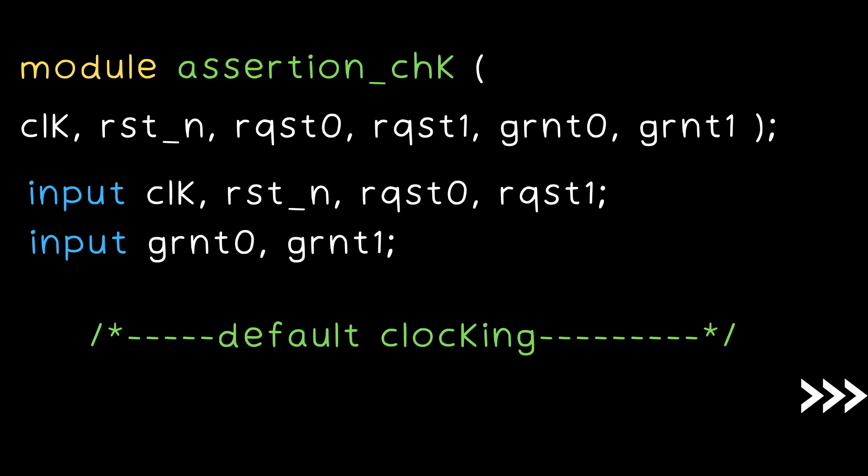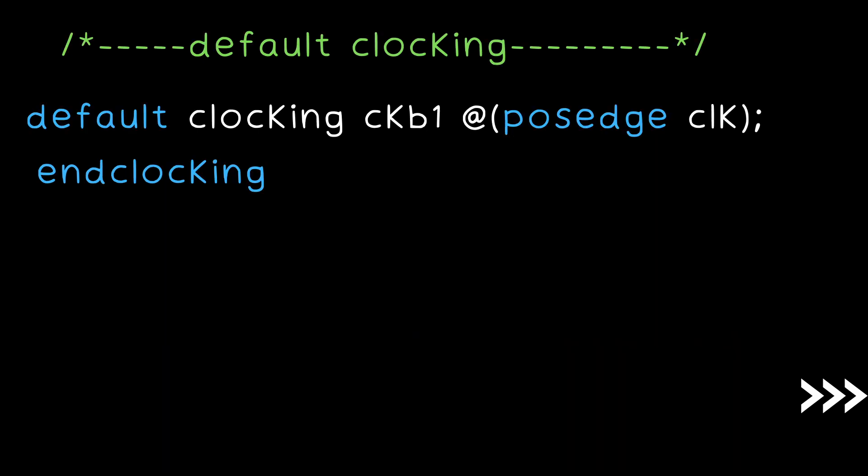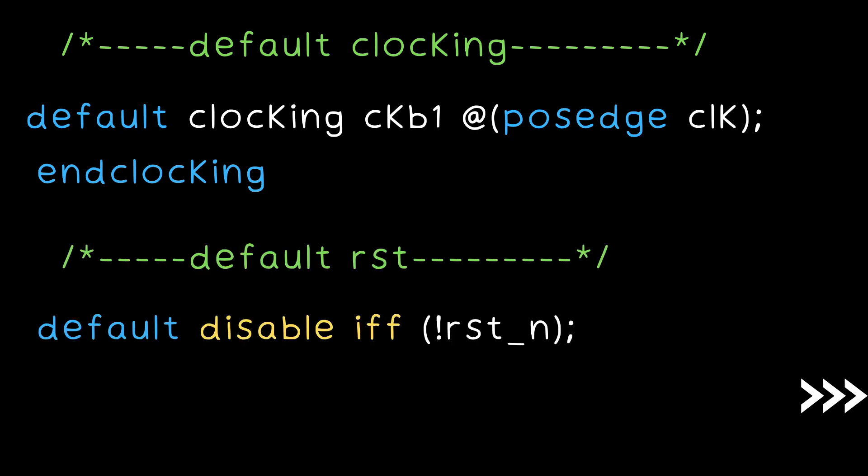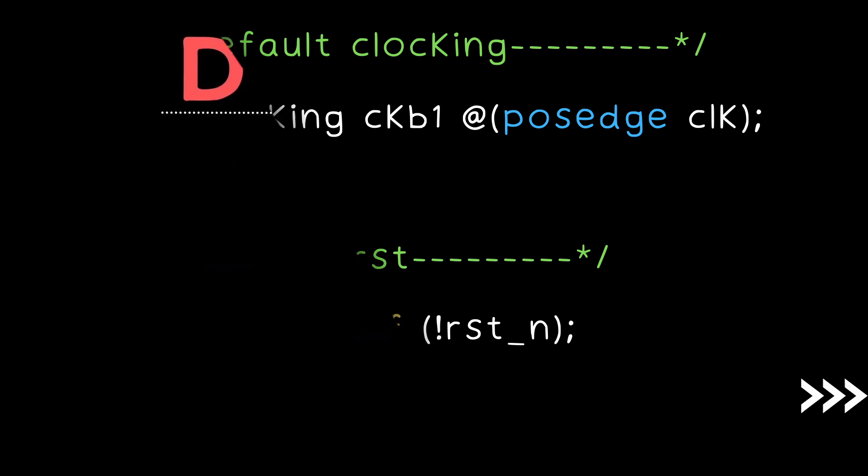Grant zero: when request zero is high, grant zero should be high. As request zero has high priority, grant zero should be high when both requests are high at the same time. Now let's add grant one — when request zero is low and request one is high, grant one should be high. From this waveform we can conclude our design is working fine.